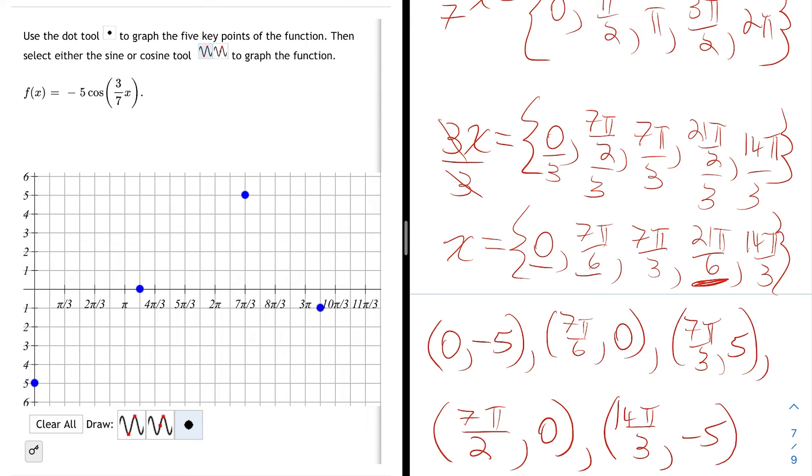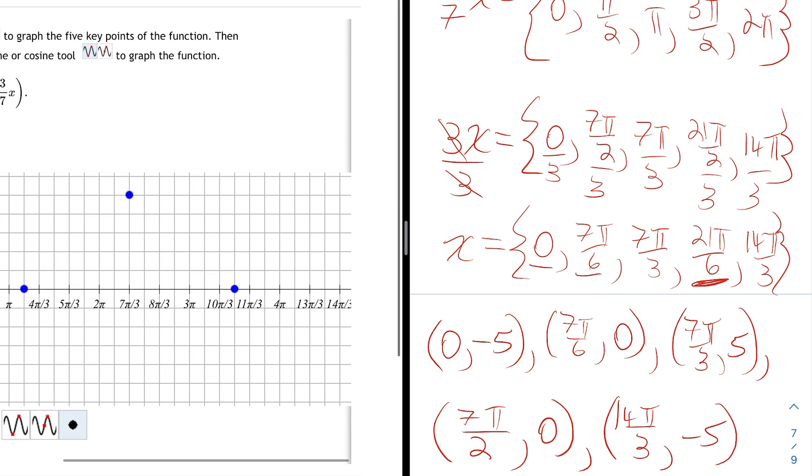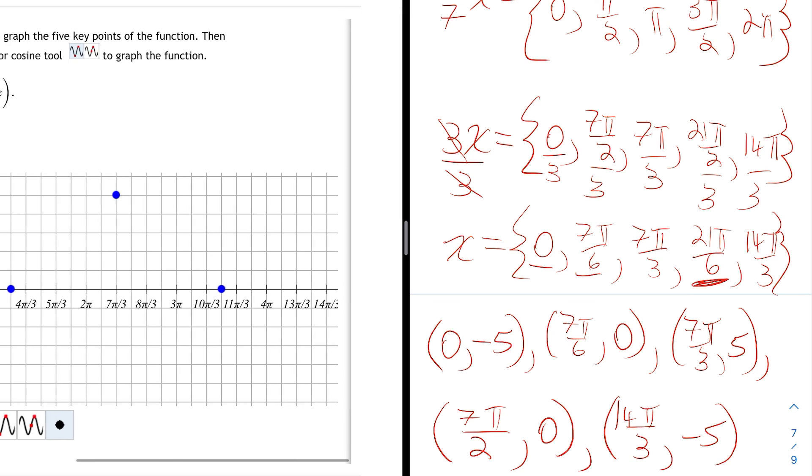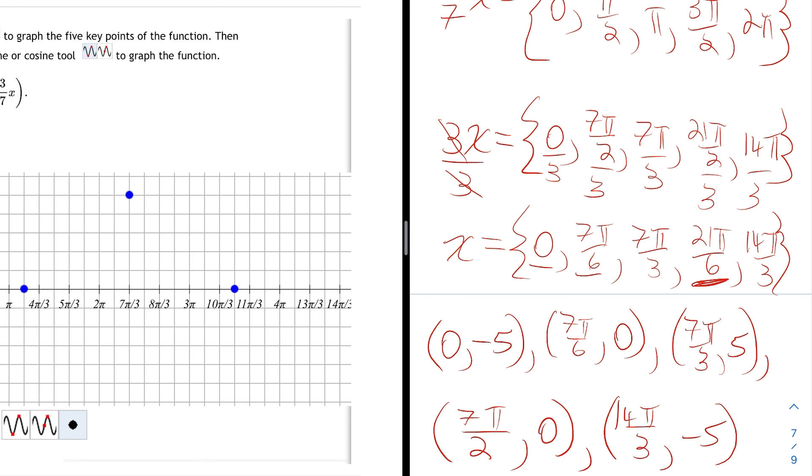10π/3 is actually 20π/6. So right after 20π/6, I'd have 21π/6. So I plot my point at 21π/6, 0, or 7π/2, 0. And then the last point is 14π/3, negative 5. So I go over to 14π/3, and I plot a point at negative 5. That's this point right here.